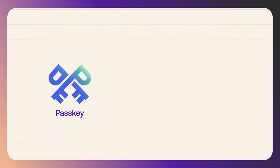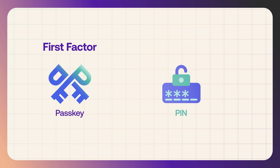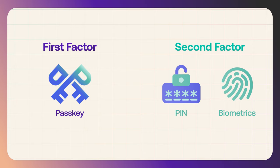When you use passkeys, you're already using two factors in one, which means that you're using multi-factor authentication. A passkey is something that you have, and that's the first factor. And to use it, you need to provide something that you know, for example a pin, or something that you are, like your biometrics, like your fingerprint. And that would be the second factor.